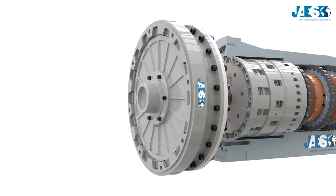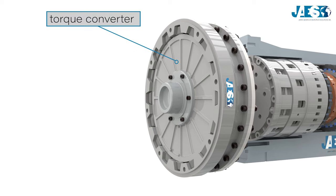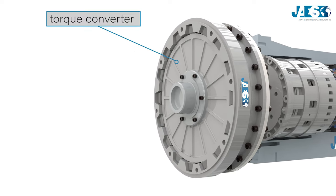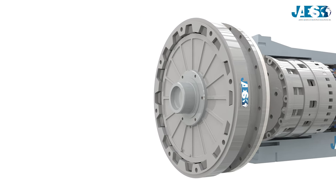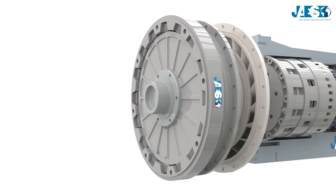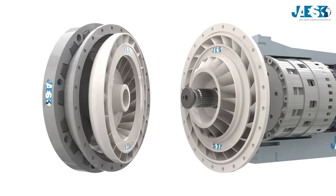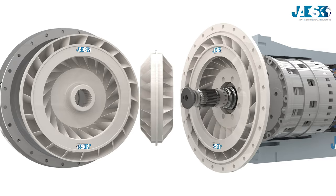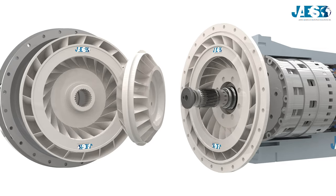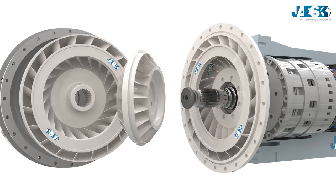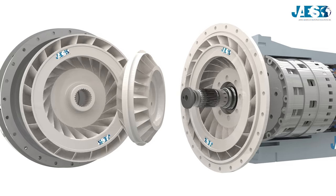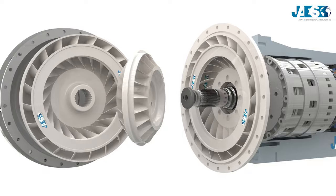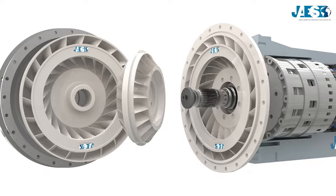Instead of the clutch disc, the automatic transmission has a torque converter, which automatically disconnects the engine from the gearbox when the vehicle is stationary and reconnects the two parts during acceleration. It is composed of a turbine immersed in a fluid to gradually transmit the torque. Unfortunately, this device is not very efficient at low speed.